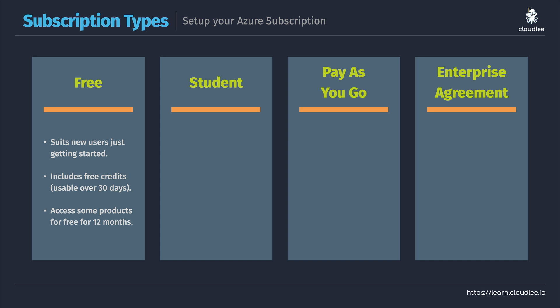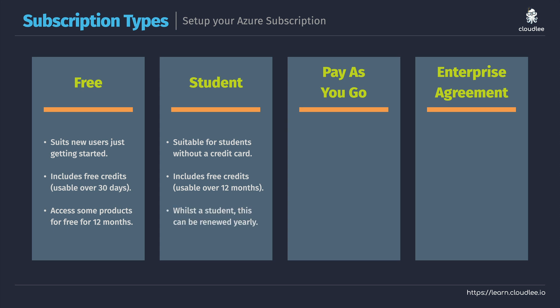If you're currently a student at an official academic institution, you can actually get a special subscription called a student subscription. The neat thing about this is you don't actually need to have a credit card to get set up. Also, like the free subscription, you do get free credits — but rather than being limited to 30 days, you can use them over 12 months, though it is a smaller amount than is available from the free subscription. And whilst you continue to be a student, you can go ahead and renew this on a yearly basis.